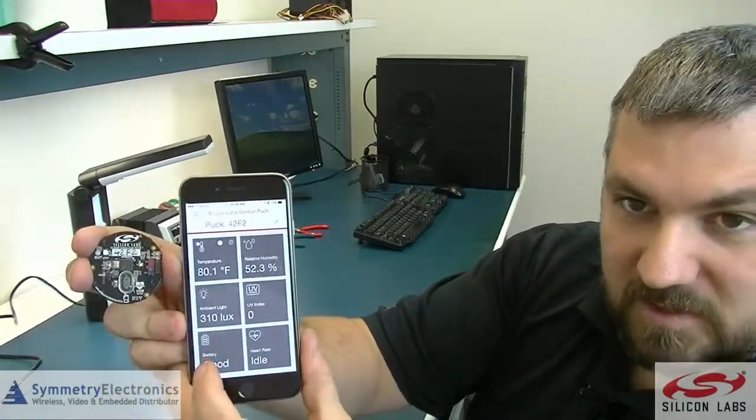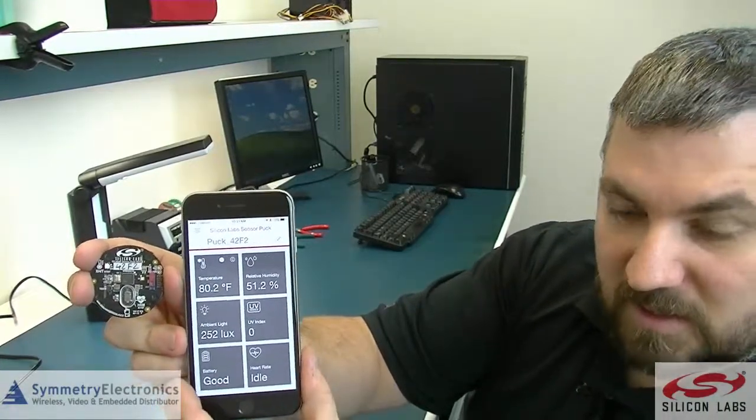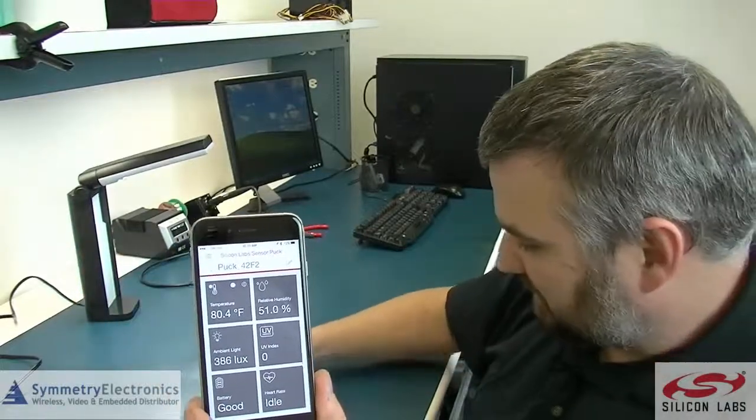The battery shows you down in the lower left corner is good. The lower right corner gives you your heart rate monitor. So now I'm going to set this down and put my finger over the heart rate monitor.